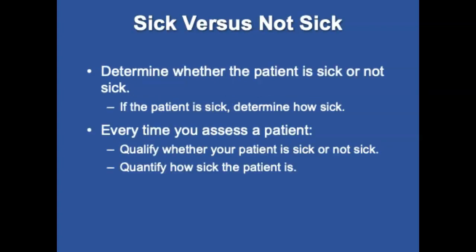An important assessment skill is determining whether the patient is sick or not sick. This could be based on the chief complaint, respirations, pulse, mental status, skin color, temperature, and condition. For trauma patients, it includes the mechanism of injury and obvious signs and symptoms of trauma. It provides the basis for determining whether the patient is stable or unstable. If the patient is sick, the next step is to determine how sick — minor illness versus life-threatening events. Every time you assess a patient, you have to qualify if your patient is sick or not sick and quantify how sick the patient is.